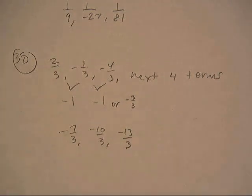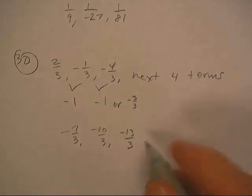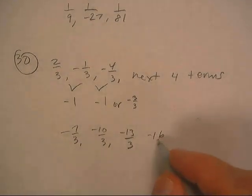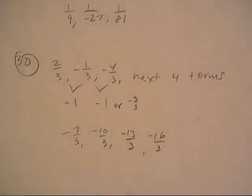We're just adding or subtracting thirds right there. Maybe one more time — how about negative sixteen-thirds. Keep dropping by three. We'll be back.